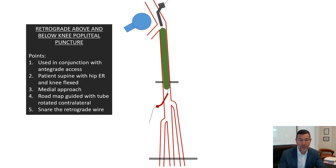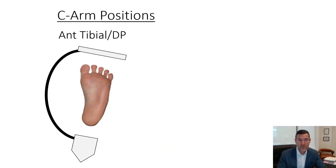You then pre-dilate, and use your choice of stents or drug-coated technology to revascularise the lesion. Sometimes puncture of the tibial arteries is required to revascularise the femoropopliteal segment, and these slides show the best C-arm positions to puncture each of the individual tibial arteries.